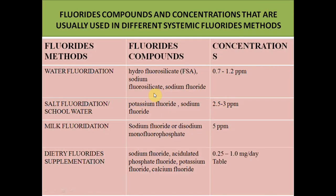In water fluoridation we commonly use one ppm — one part per million. In salt or school water fluoridation it ranges from two to three ppm, because the amount of water consumed by school children is low and the number of days children attend is less compared to community water fluoridation. Community water fluoride supplies water to the house, so we tend to drink more water at home. To get a one ppm net effect, we need to increase the concentration because of less intake in school or salt water fluoride.